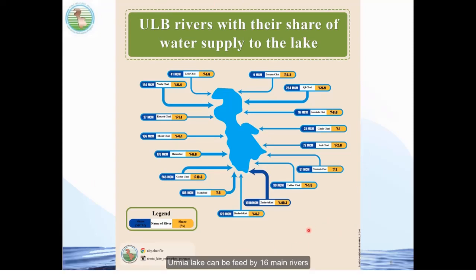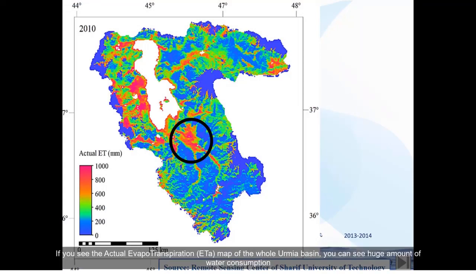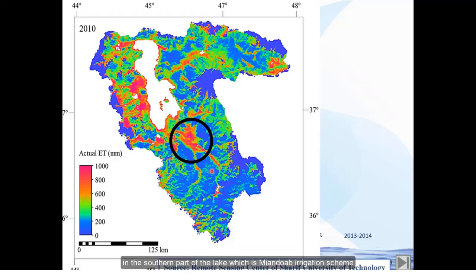Urmia Lake can be fed by 16 main rivers, the most important of which is the Zarineh Roud River, which supplies about 40% of the water reaching the lake. Urmia Lake is located almost here on the map. Looking at the actual evapotranspiration map of the whole Urmia Lake Basin, you can see a huge amount of water consumption in the southern part of the lake, which is the Mion Doab Irrigation Scheme.